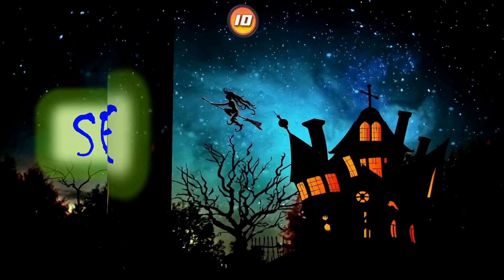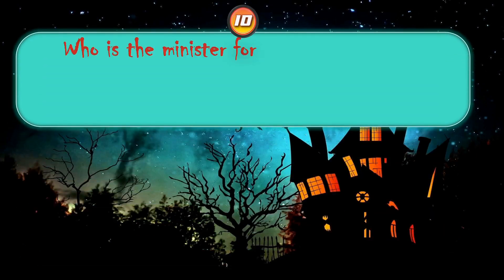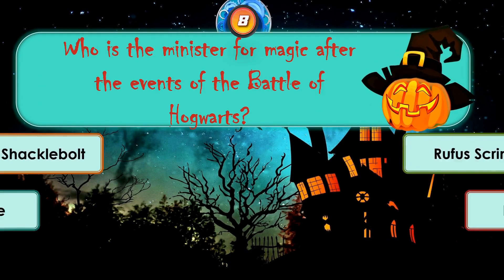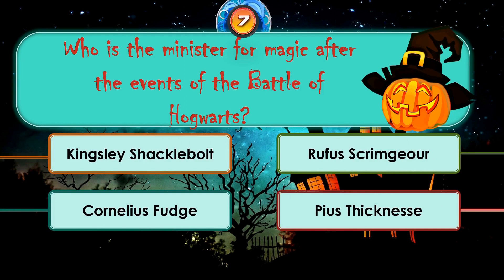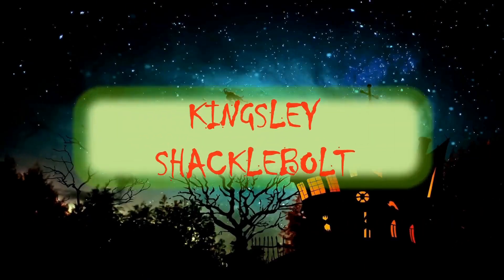Moving to next question: who is the Minister for Magic after the events of the Battle of Hogwarts? Kingsley Shacklebolt, Rufus Scrimgeour, Cornelius Fudge, Pius Thicknesse. The correct answer is Kingsley Shacklebolt.